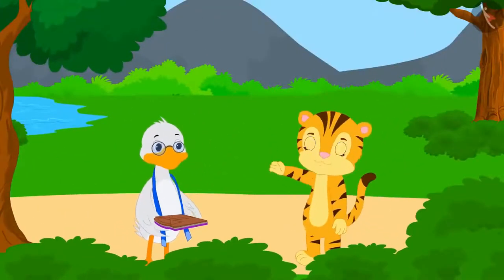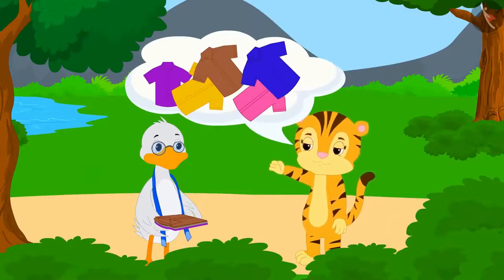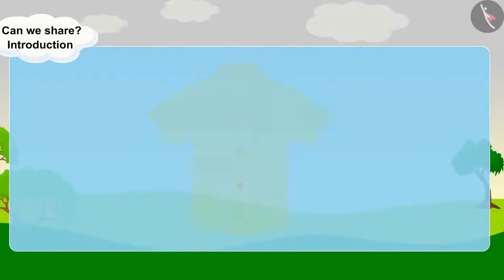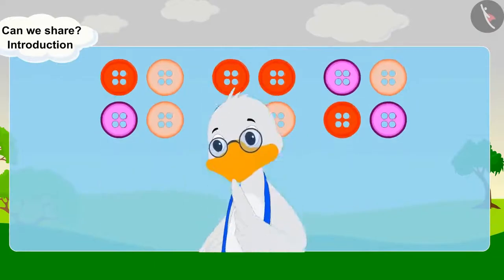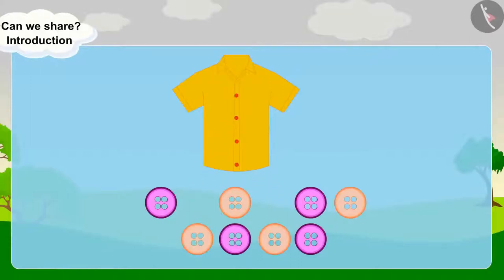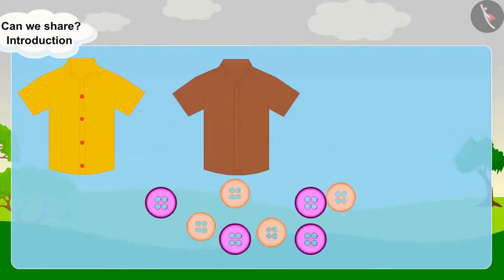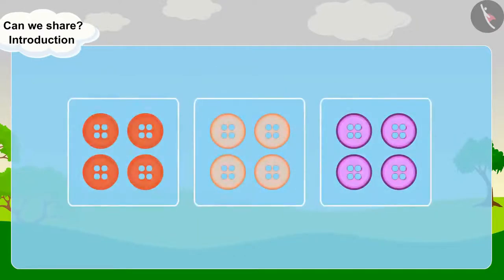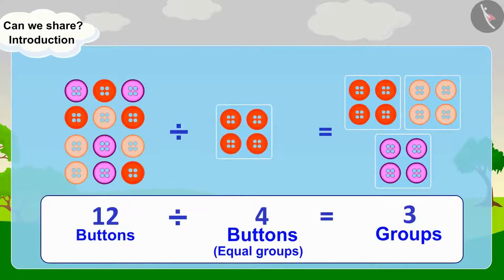Shere Khan's mother asked Barbole Tailor to make some shirts for Shere Khan's special friends. The tailor attaches 4 buttons to each shirt. He has 12 buttons. After putting 4 buttons on the first shirt, the tailor had 8 buttons left. After the second shirt, 4 buttons remained. After putting 4 buttons on the third shirt, all the buttons are over. Creating groups of 4 buttons, 12 buttons were divided into 3 groups.